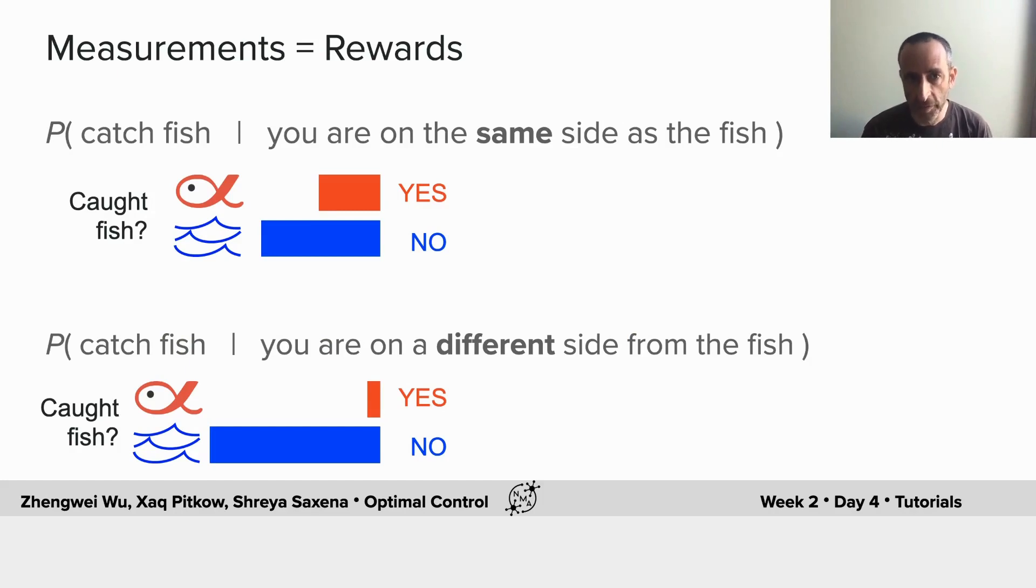And those also are the rewards that we get. So we'll have two different probabilities: one of catching fish if you're on the same side as the fish, and another if you're on the other side from the fish. Of course, you'll catch more fish when you're on the side with the school, and you'll only catch stragglers on the other side.